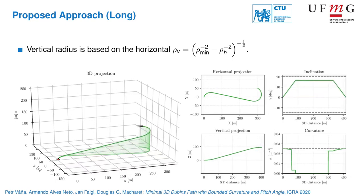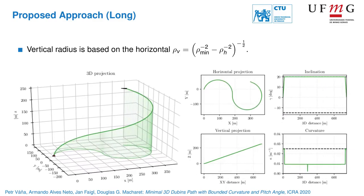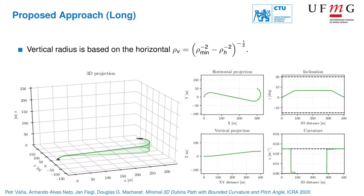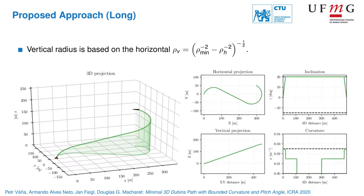Once a feasible radius is found, it is further optimized locally to minimize the total path length. Usually, it converges to the minimum feasible value of the horizontal radius.